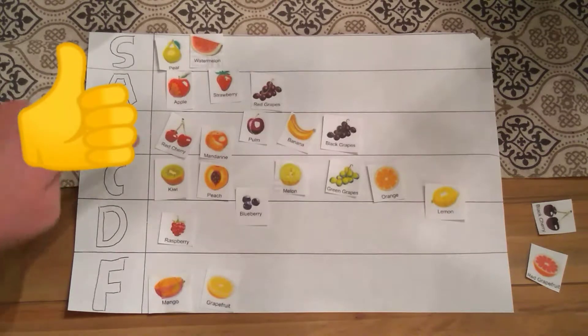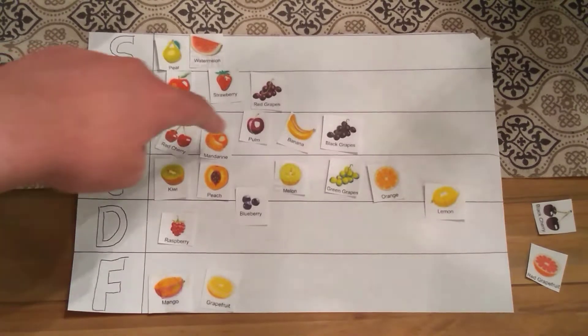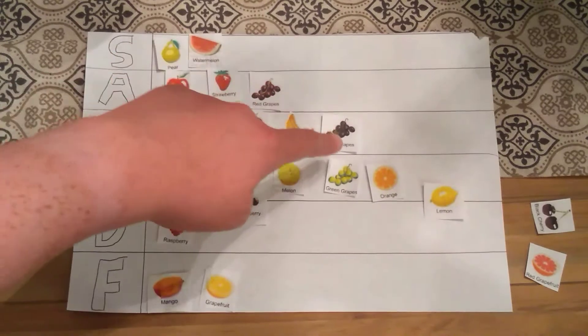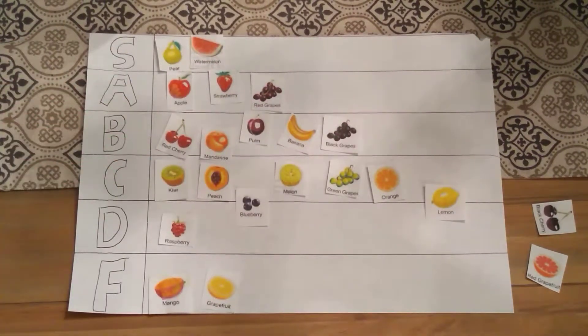Red cherries, mandarin, plums, bananas, and black grapes are in the B tier. Because they're not as good as A. But, they're slightly less good.